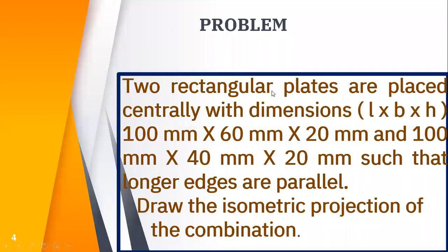You are having two rectangular plates and the dimension of each rectangular plate is given. One is 100 by 60 by 20, the other one is 100 by 40 by 20 mm. You need to draw the isometric projection of the combination of these two rectangular plates.